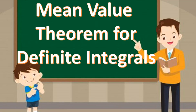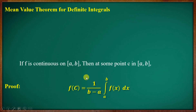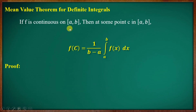Mean value theorem for definite integrals. Definition: if f is continuous on closed interval [a, b], then there exists a point c in closed interval [a, b] such that f of c equals 1 divided by (b minus a) times the integral from a to b of f(x) dx.